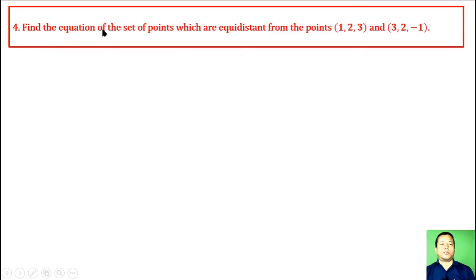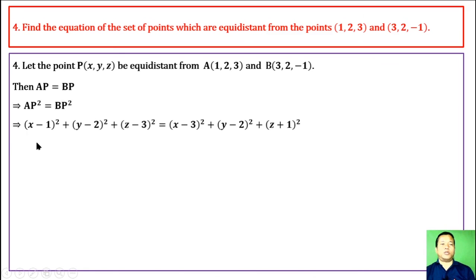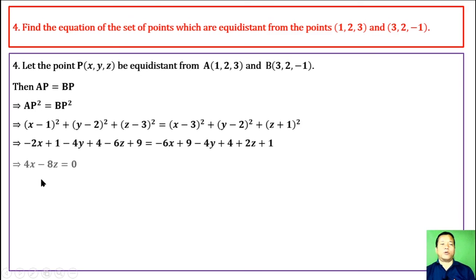Question 4 (Number 4): Find the equation of the set of points equidistant from two given points. By the given condition AP = BP. Squaring both sides and applying the distance formula, then expanding and cancelling, we obtain the required equation of the set of points.